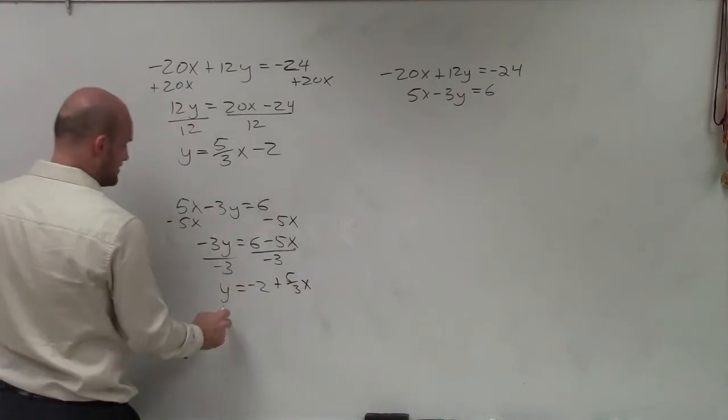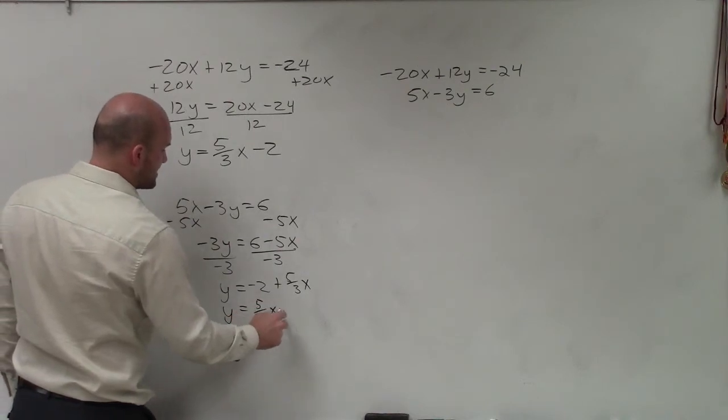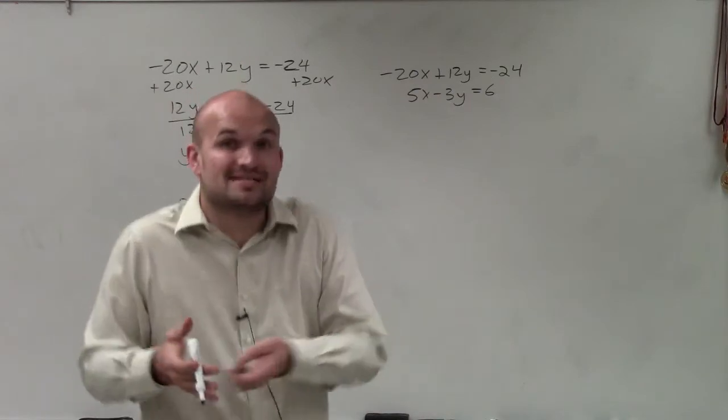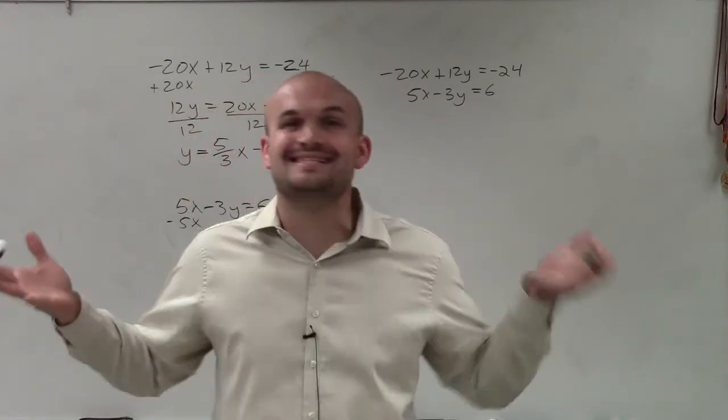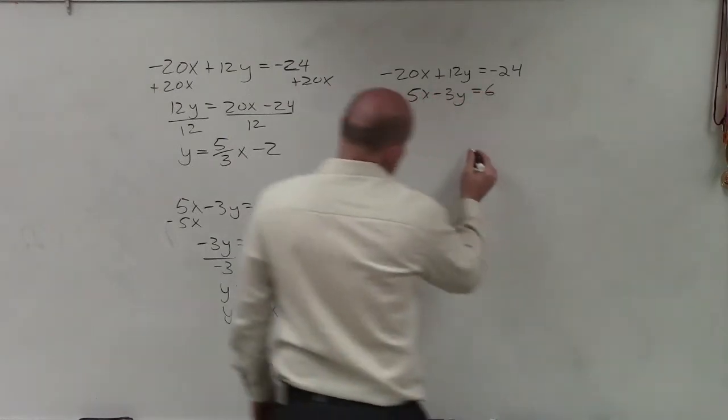So therefore, by rewriting this in the correct format, y equals 5 thirds x minus 2, you can now see that these are the exact same equation. So yes, there is a consistent solution, but it's the exact same line. So it's what we call dependent.